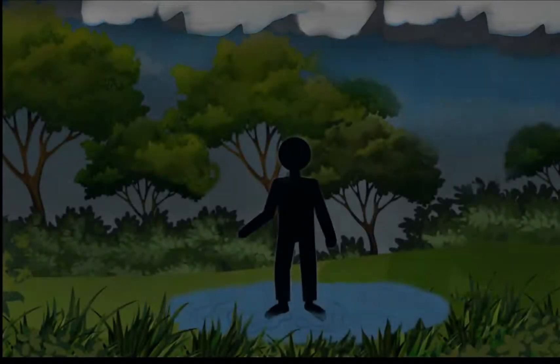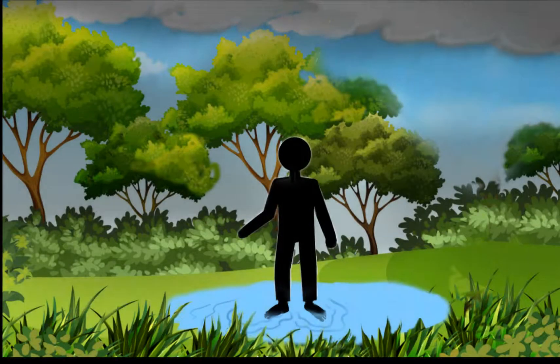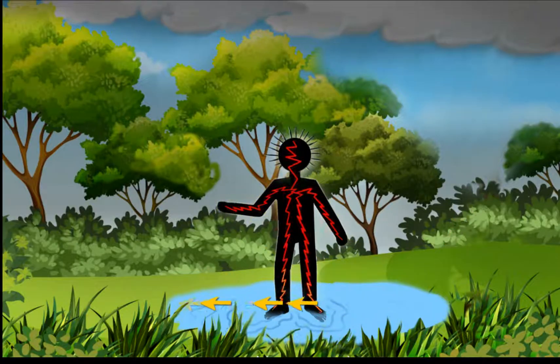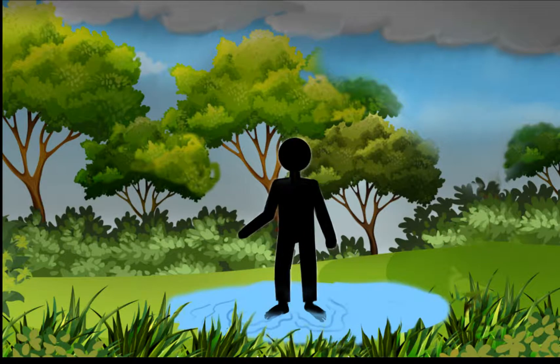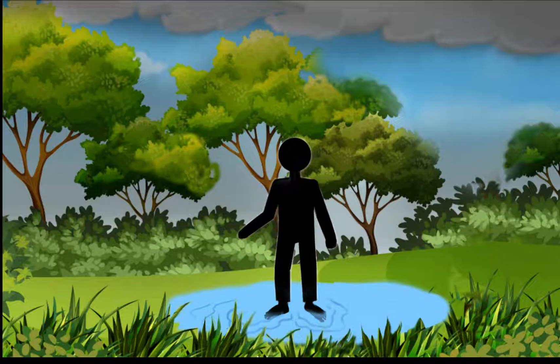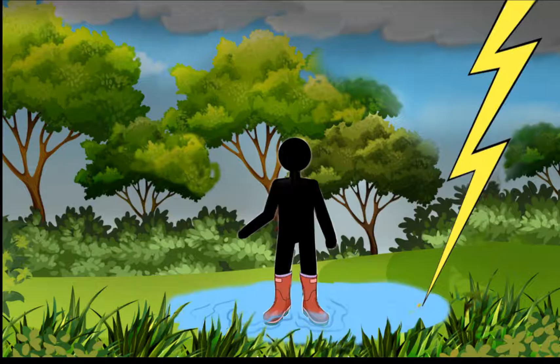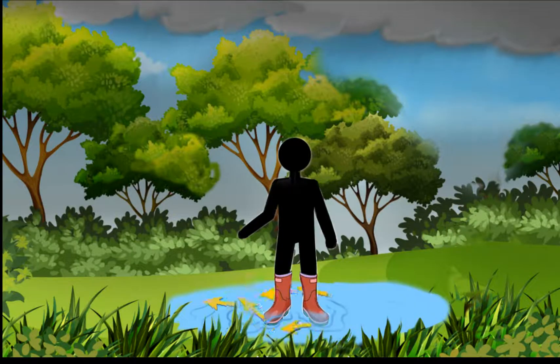We have all been told not to go swimming or stand in puddles during a thunderstorm. This is because water is a good conductor of electricity. Electrical currents flow easily in a good conductor. But rubber boots could save you. Rubber, as opposed to water, resists the flow of electrical current.